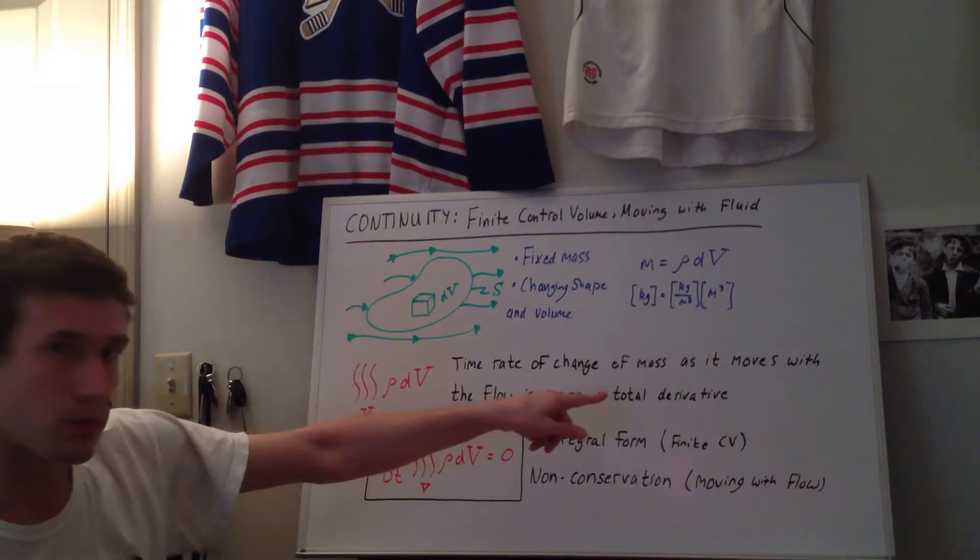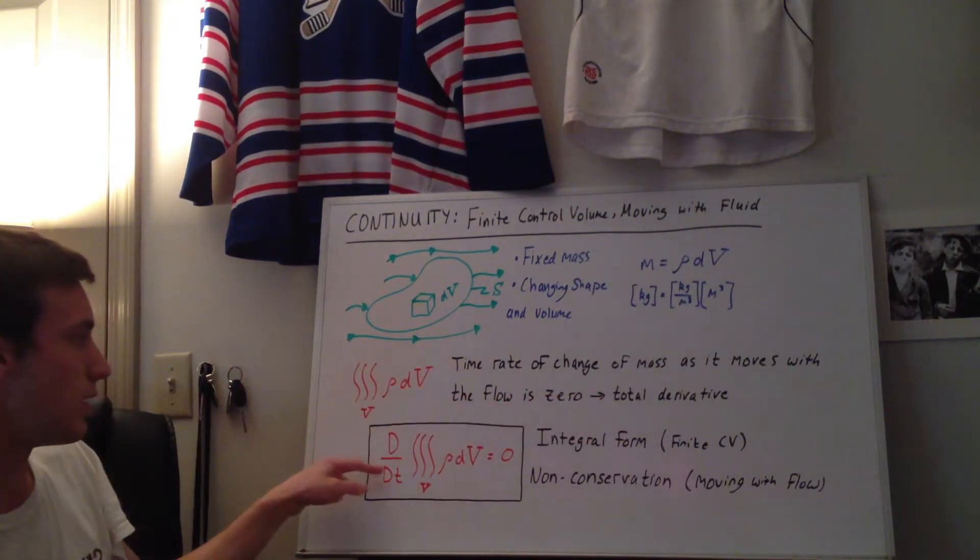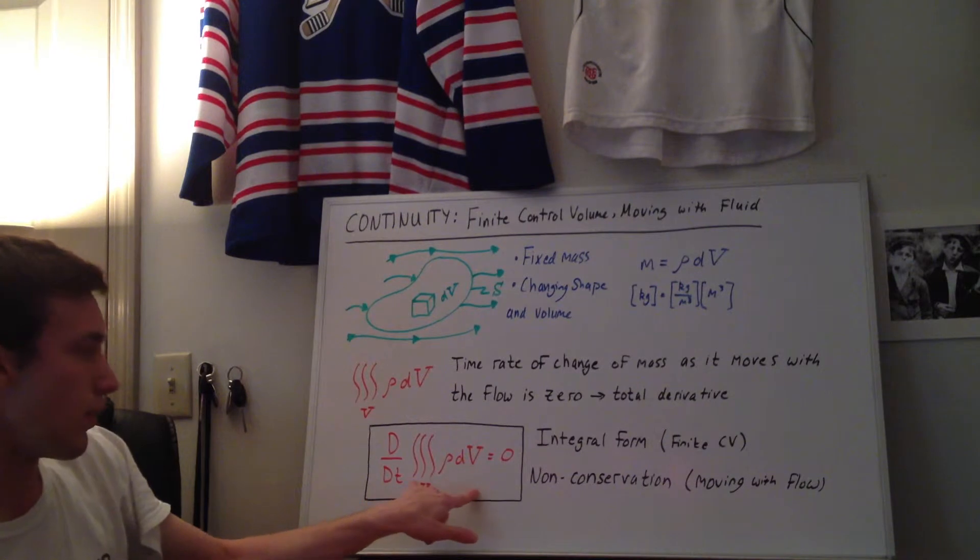So the time rate of change of this, which is the mass inside the control volume, is zero. Like we said, that's the total derivative or the substantial derivative. So we have the d dt times the mass inside the control volume is equal to zero.